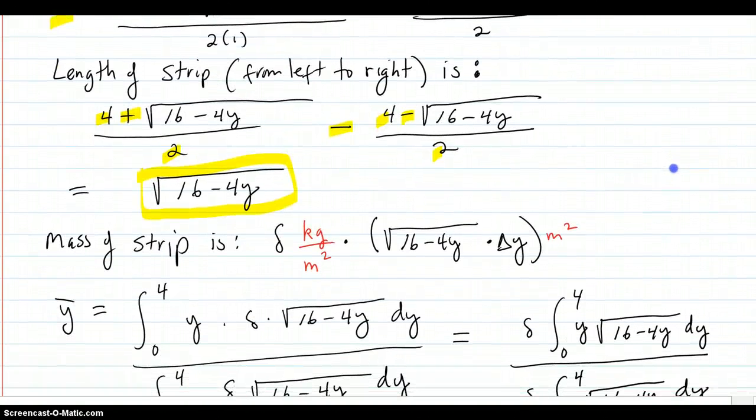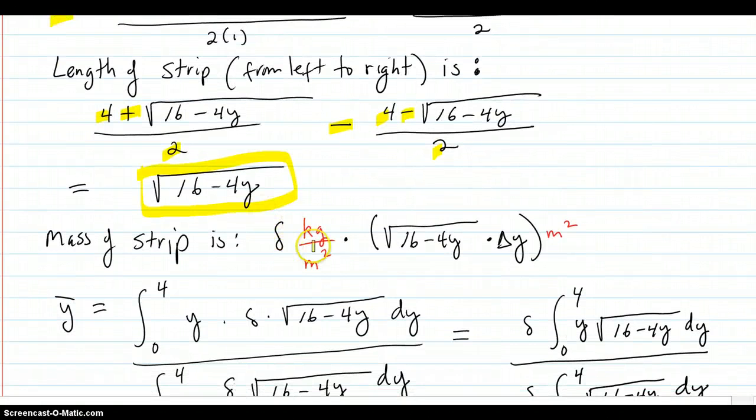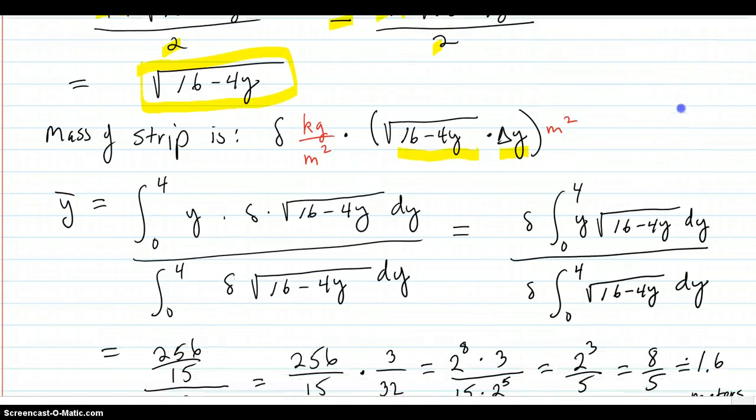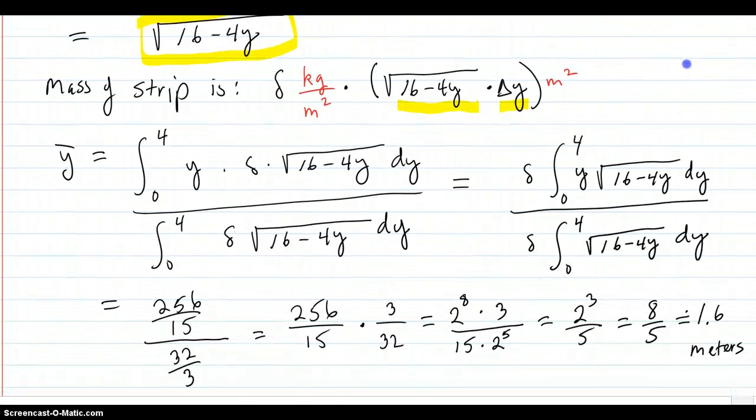So then the mass of the strip is your density, delta kilograms per meter squared, and here's your area of the strip. How wide it was times how high it is, which is delta y.